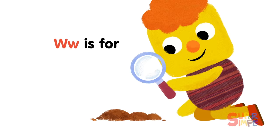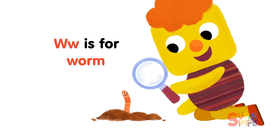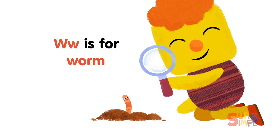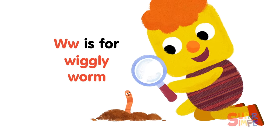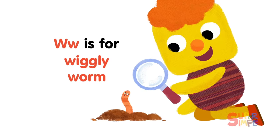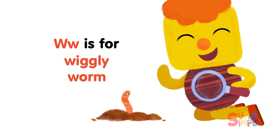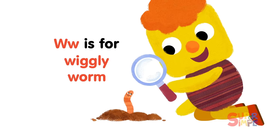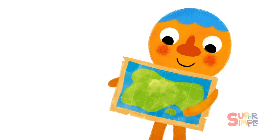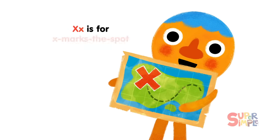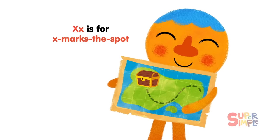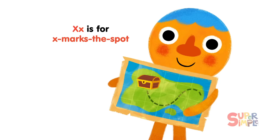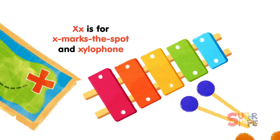W is for Worm, Wiggly Worm. X is for X marks the spot and Xylophone.